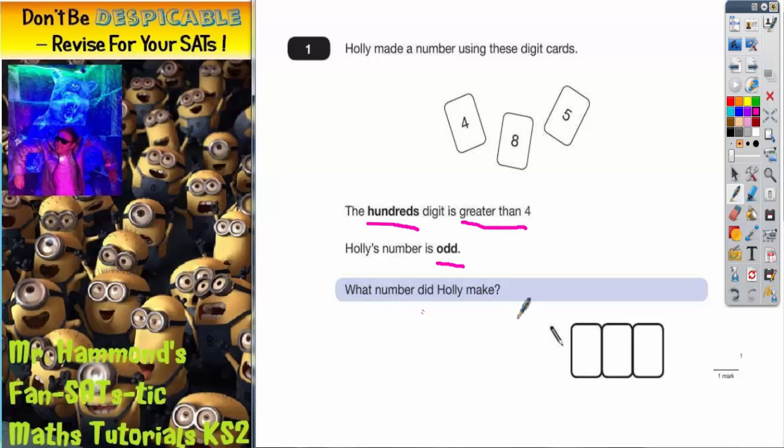To find what number did Holly make. The first thing I'm going to do is put the column headings over these boxes here. So this would be my units, this would be tens, and this would be hundreds.